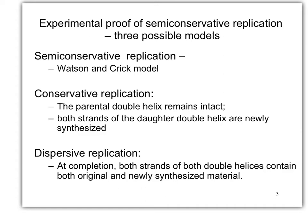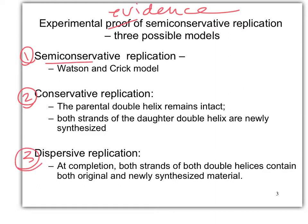Hello, and we're ready to look at this experimental evidence — proof being a stupid word that we don't use — of semi-conservative replication. So here were three possible models. This is the one that we know is correct, along with this possible model and this possible model. Semi-conservative is what we say happens; it's what Watson and Crick came up with.